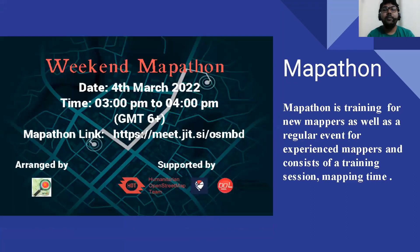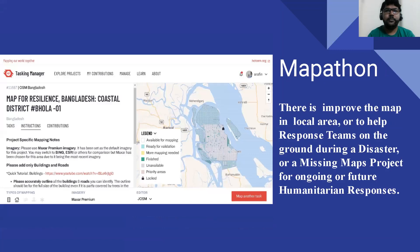Mapathon is a training for new mappers as well as a regular event for experienced mappers, and consists of a training session and mapping time. There is work to improve the map in a local area, or to help response teams on the ground during disasters, or a missing maps project for ongoing or future humanitarian responses.